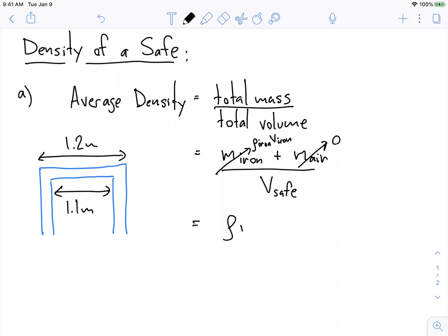Well, okay, so what is that volume? There's a bunch of ways that you could try to figure it out, but we know it's a cube, right? So the volume of the iron in the safe is the volume of the outside cube minus the volume of the inside cube, and that's divided by the total volume of the safe.